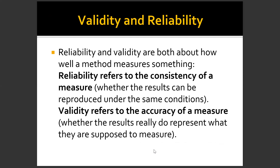Now let's talk about validity and reliability. Reliability and validity are both about how well a method measures something. Reliability refers to the consistency of the measure — whether the results can be reproduced under the same conditions. Validity refers to the accuracy of the measure — whether the results really do represent what they are supposed to measure. So reliability is the consistency of your research instrument, while validity refers to the accuracy and whether your instrument measures what you intend to measure.